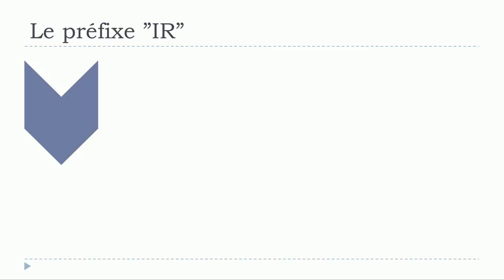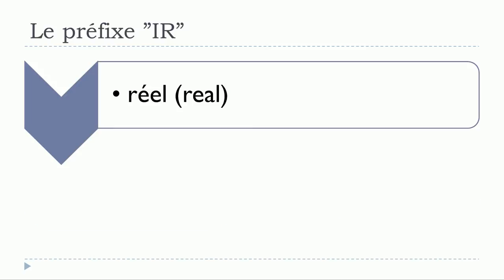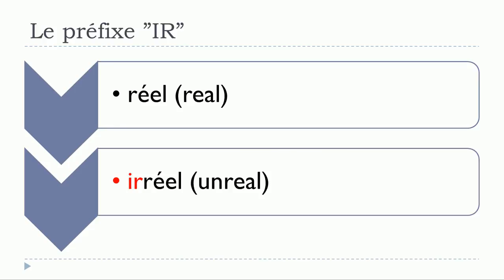Let's check three examples. The first one is réel. As I said, you just add IR at the beginning and you get irréel. Réel becomes irréel.